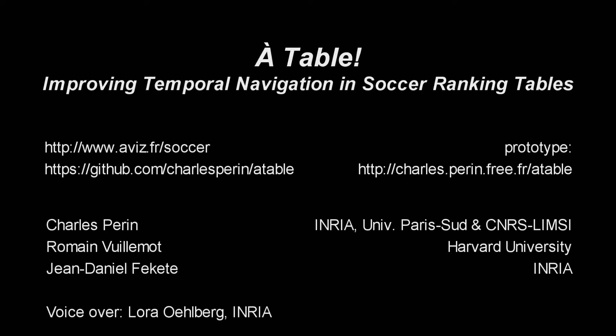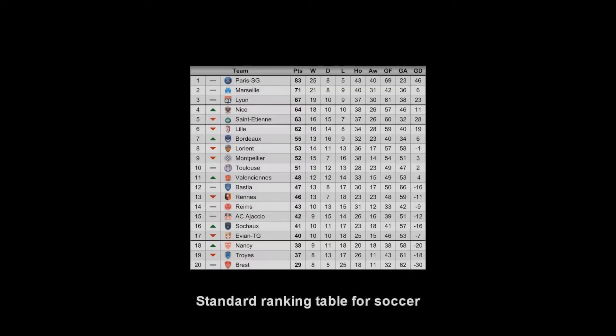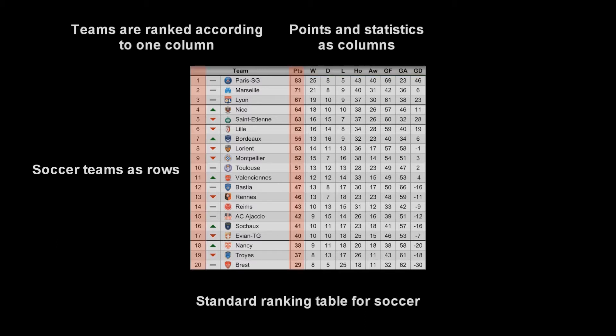We present A Table, an interactive table improving temporal navigation in soccer ranking tables. Standard ranking tables for soccer championships display teams as rows and points and other statistics as columns, such as the number of wins or the number of goals conceded. Teams are ranked according to one column, by default the accumulated number of points.